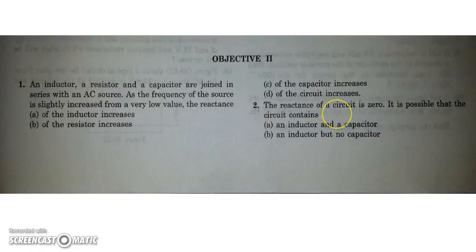The second question, the reactance of a circuit is 0. So is it possible that the circuit? Yes, the circuit may have equal XL and Xc, or it may have both the components are absent. So in that two situations only, the reactance will be 0. So first, the inductor and capacitor have equal reactance.